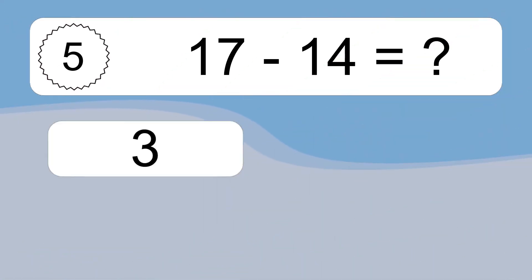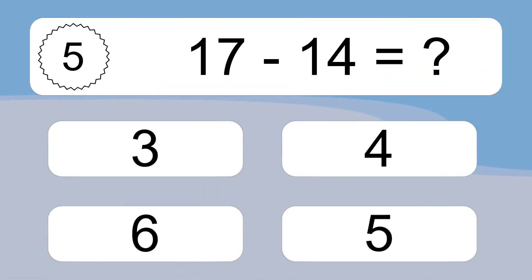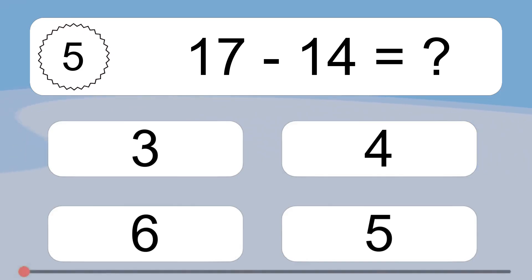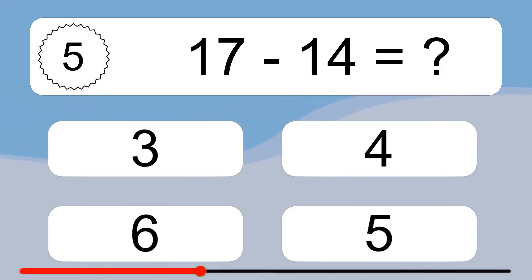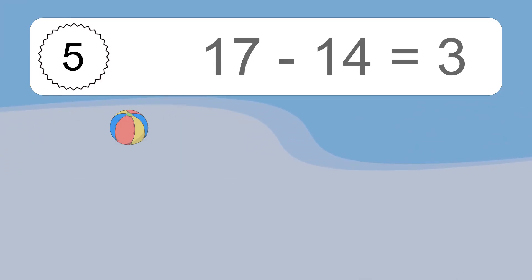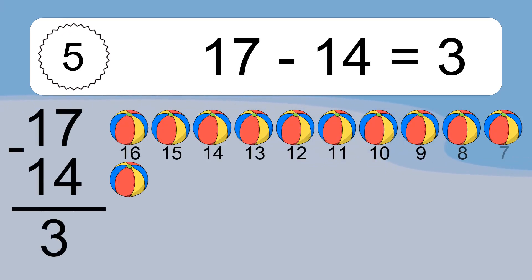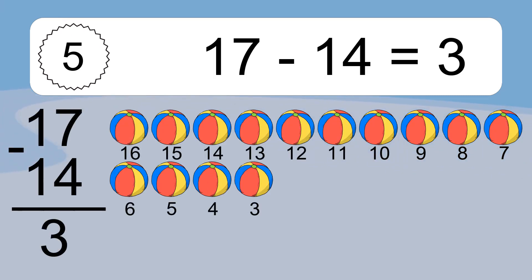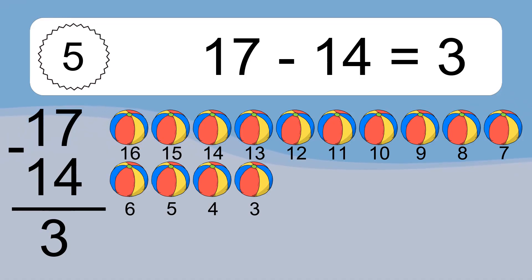17 minus 14 equals what? 17 minus 14 equals 3. Let's count it: 16, 15, 14, 13, 12, 11, 10, 9, 8, 7, 6, 5, 4, 3.